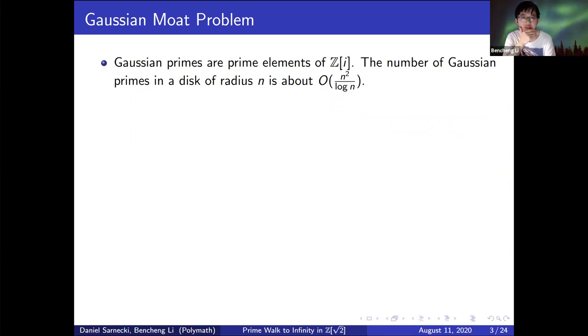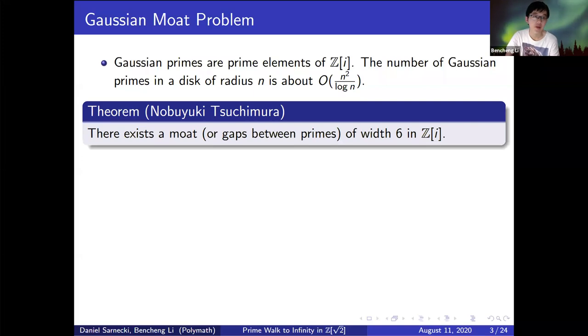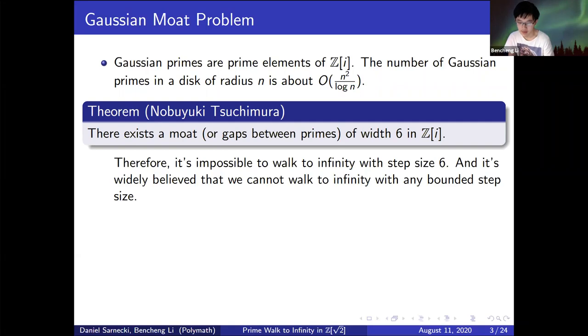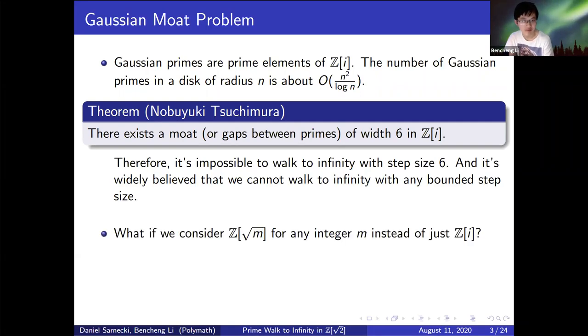Well, the answer is no, but I will tell you why exactly later. We see that the number of Gaussian primes in a disk of radius n is about the order O(n²/log n). There's a quite famous theorem by Nobuyuki Tsuchimura telling that there exists a moat or gaps between primes with width 6 in Z[i], so that means we cannot walk to infinity within distance 6 in Z[i]. And it's widely believed that we cannot walk to infinity with any bounded step size.